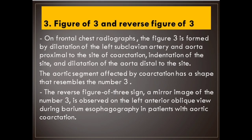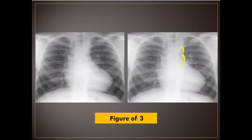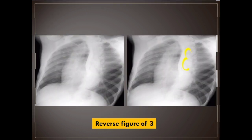Number 3: Figure of 3 and reverse figure of 3. On frontal chest radiographs, the figure 3 is formed by dilatation of the left subclavian artery and aorta proximal to the site of coarctation, indentation at the site, and dilatation of the aorta distal to the site. The aortic segment affected by coarctation resembles the number 3. The reverse figure of 3 sign, a mirror image of the number 3, is observed on the left anterior oblique view during barium esophagography in patients with aortic coarctation.